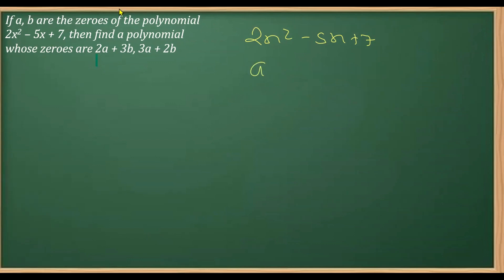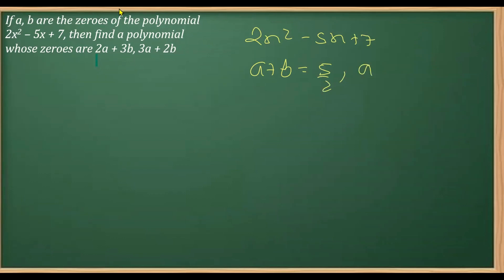Instead of factorizing, we first obtain the sum and product of the zeros. The sum of the zeros is minus b over a, which is minus(−5) over 2, giving 5/2. The product of the zeros, a×b, is c/a, that is 7/2.